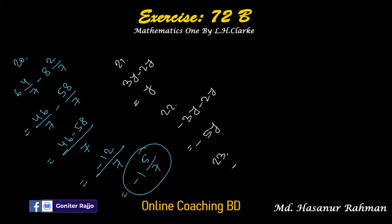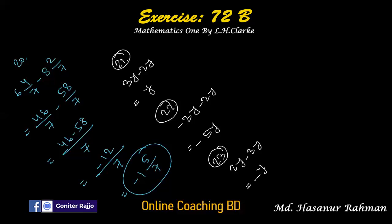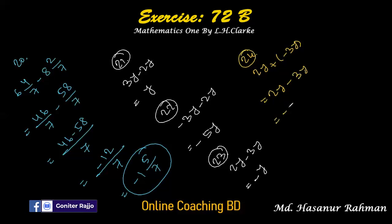Number 23: 2y minus 3y. Both have different signs so we subtract. 2y has a positive sign but 3y has a negative sign, so the answer is y with a negative sign — that is minus y. Number 24 says 2y plus minus 3y, which is the same as 23, so the answer is also minus y.